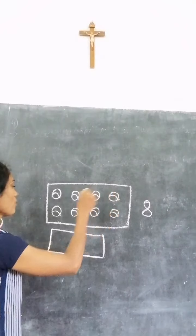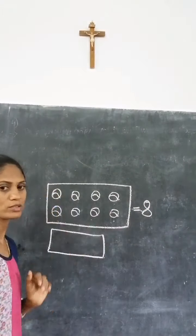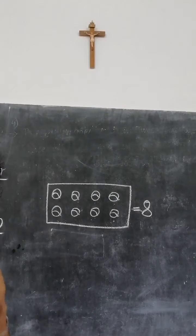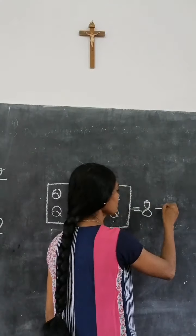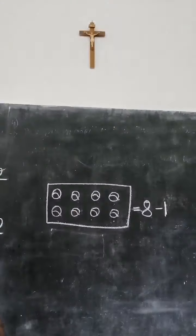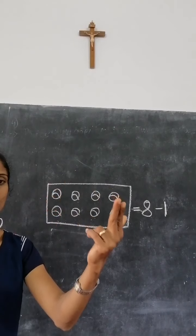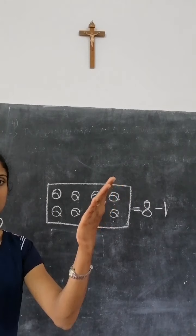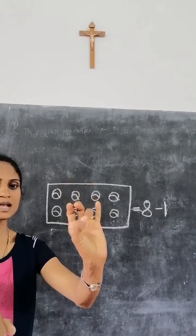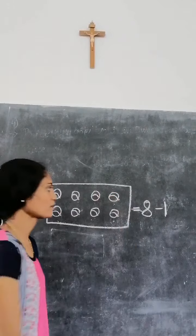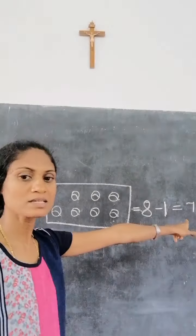Did you understand? Yes. You can see — how many balls? 1, 2, 3, 4, 5, 6, 7, 8. How many balls are there? There are 8 balls. From that I will minus 1. How many remain? After counting: 1, 2, 3, 4, 5, 6, 7. How many remain? 7. So 8 minus 1 equals 7.